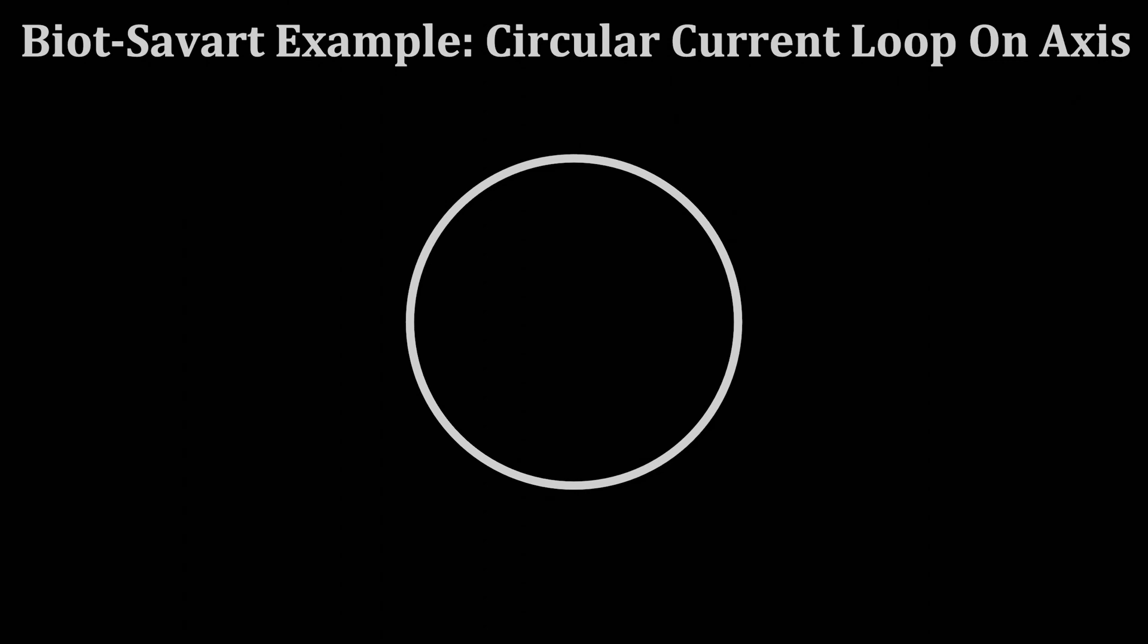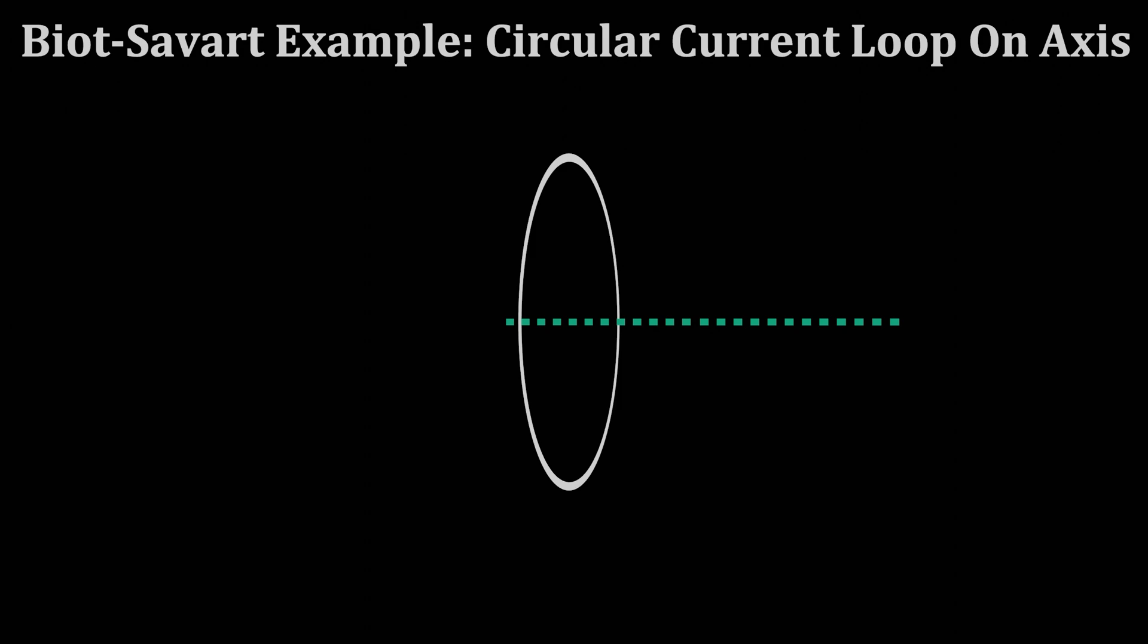In this video we'll use the same circular current loop, but we're going to instead calculate the B field at any point on this circular current loop's central axis along this dotted line.